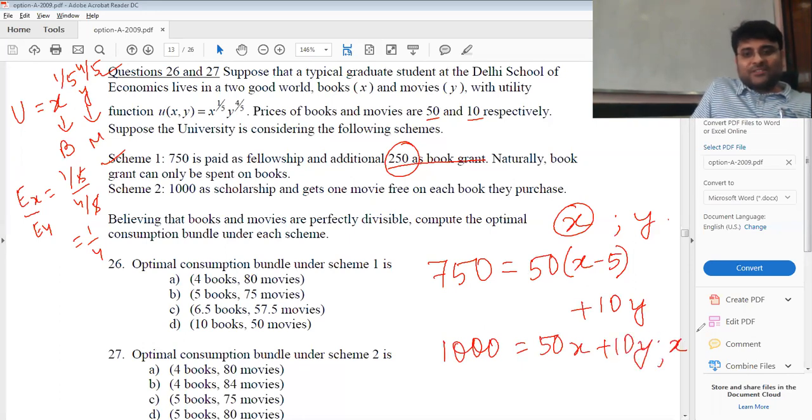But X has to be greater than or equal to 5. X cannot be less than 5, not possible, because I have already spent my 250 on the book grant. So X has to be greater than or equal to 5. So this is the budget line equation.